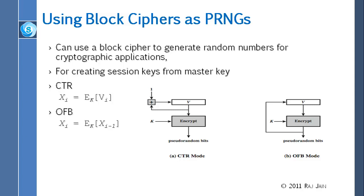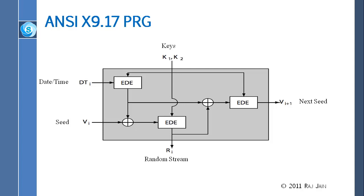These methods can be used to create master keys and session keys. When two computers are communicating, they keep changing keys every few minutes by deriving new keys from previous keys — these are called session keys. They are not used for very long. Just like round keys are derived from a master key in block ciphers, in a communication session we keep deriving session keys from the master key.